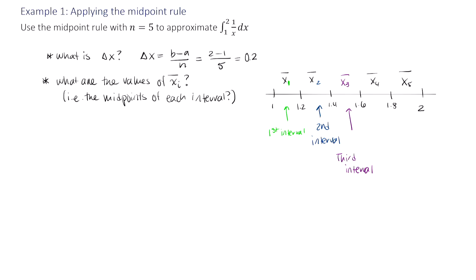So x₁ bar is equal to 1/2 times 1.2 plus 1. So that's 2.2 divided by 2, which is just 1.1. And so this is the midpoint right here, is 1.1. Pause your video now and see if you can determine what these midpoints are. So this is 1.3, 1.5, 1.7, 1.9. So those are all your midpoints. And now's a good time to erase all this extra junk here. We don't need it anymore.